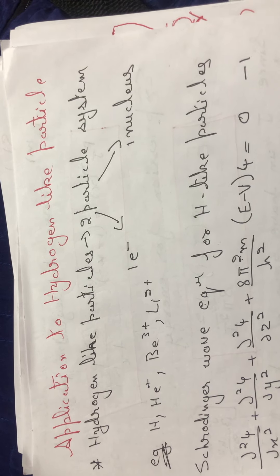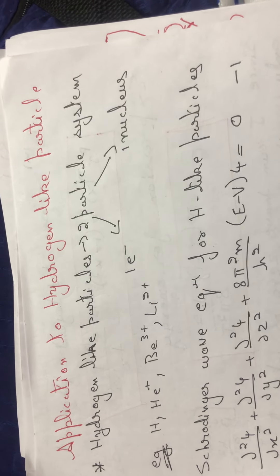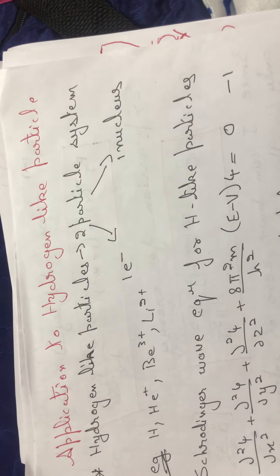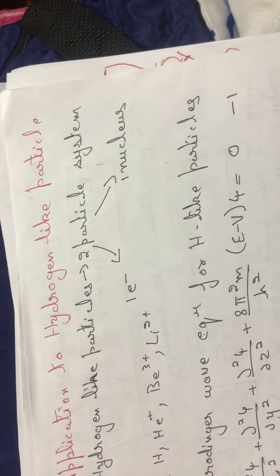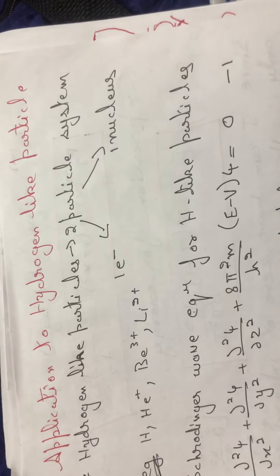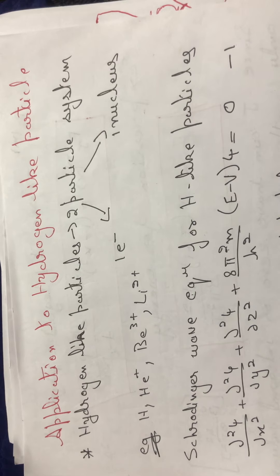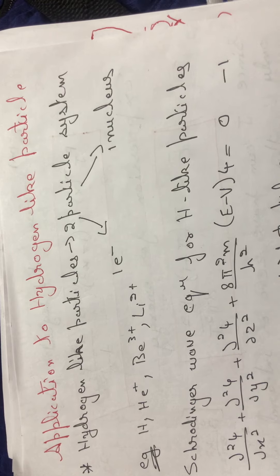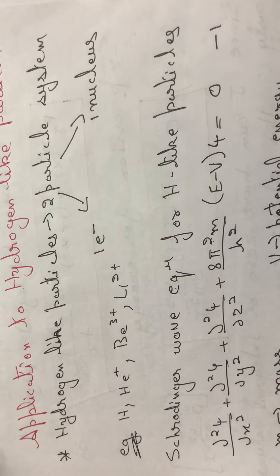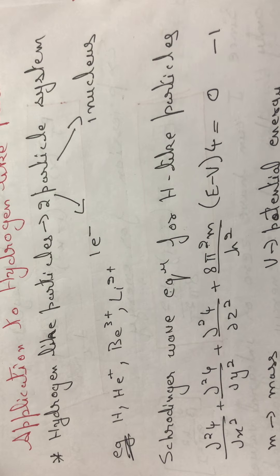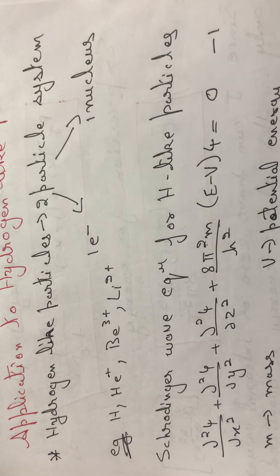The two particles are: one must be an electron and the other is the nucleus. All the protons and neutrons in the nucleus are considered to be one particle because they are quite close together. In short, any atom which has only one electron is hydrogen-like — for example, hydrogen, helium He⁺, Be³⁺.